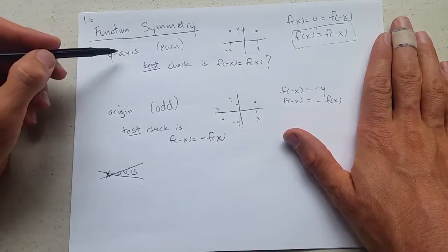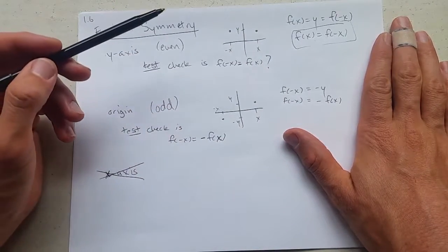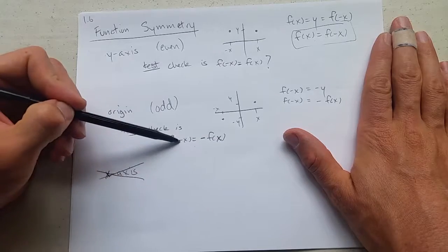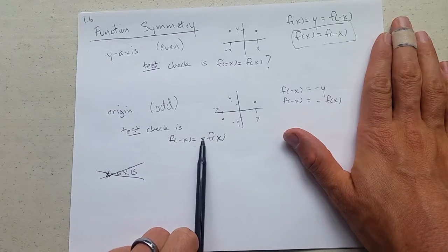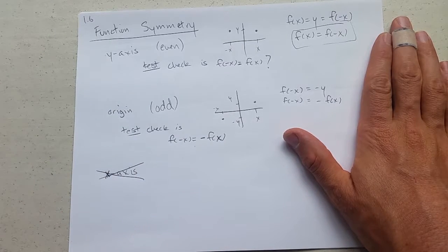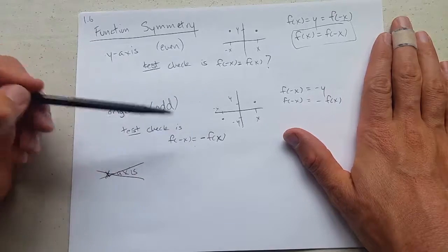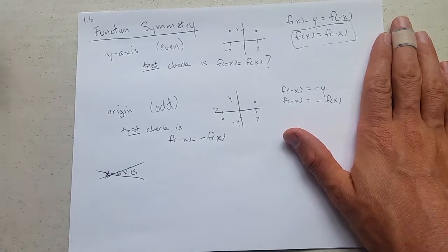So you're even if the function doesn't care about negative x. You're odd if you can basically pull the negative through the function. If you can't do either, then you do not have symmetry.